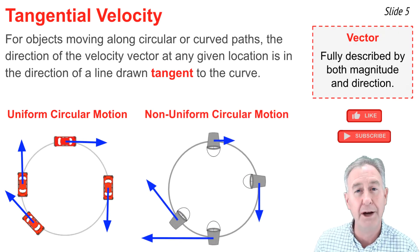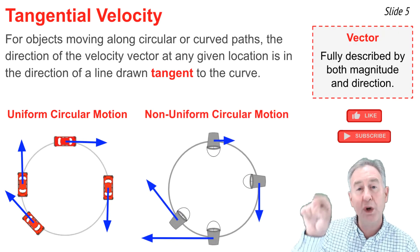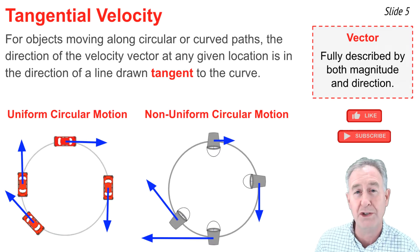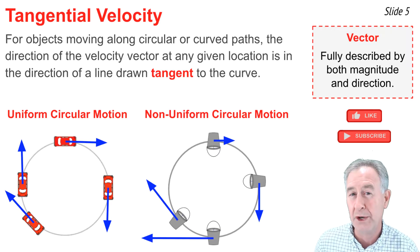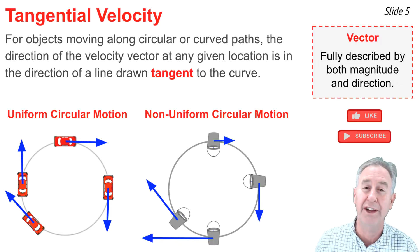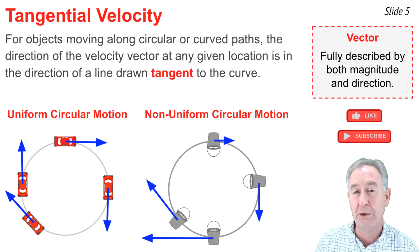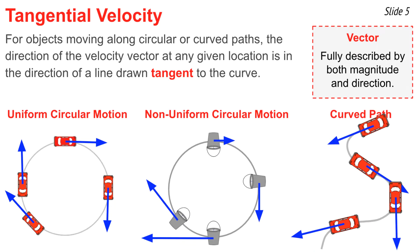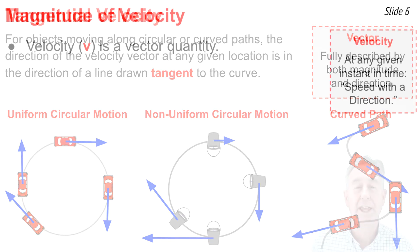This is a side view of a bucket of water tied by a rope and whirled in a vertical circle. You'll notice two things about the blue velocity vectors: they're tangent to the circle at all four locations shown, and their size varies — a shorter arrow at the top indicates slower speed, and a longer arrow at the bottom indicates faster speed. This next diagram represents a car moving along a curved path — a collection of circles joined together — and the blue velocity vectors are tangent at every location shown.